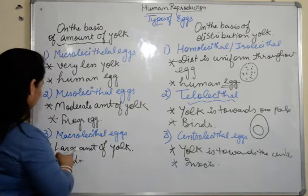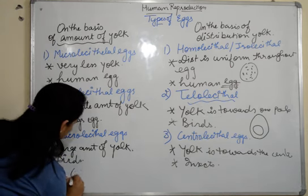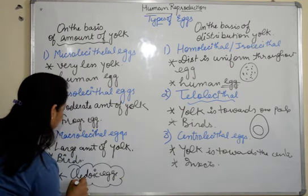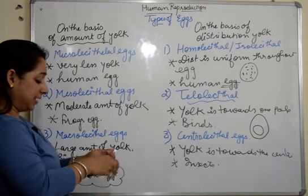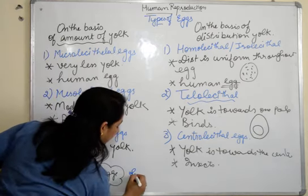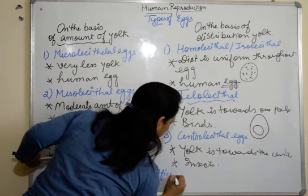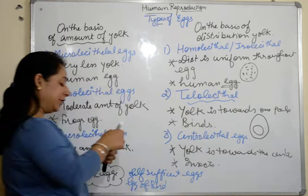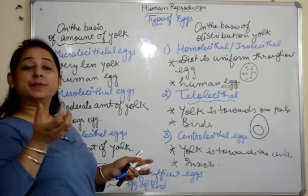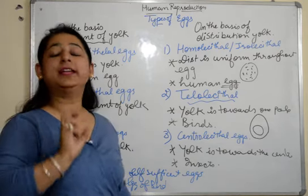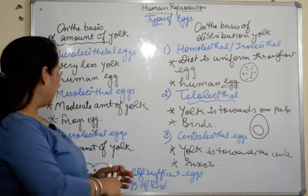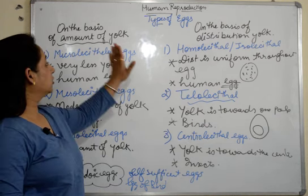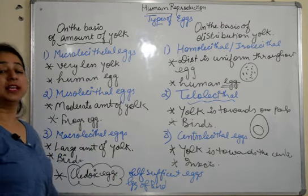We have one more category: the type of eggs known as cleidoic eggs. Cleidoic eggs are self-sufficient eggs — for example, the eggs of birds. They are sufficient enough to provide nourishment to the organism so that it can develop into a fully grown organism and then hatch out. So those types of eggs are known as cleidoic eggs.